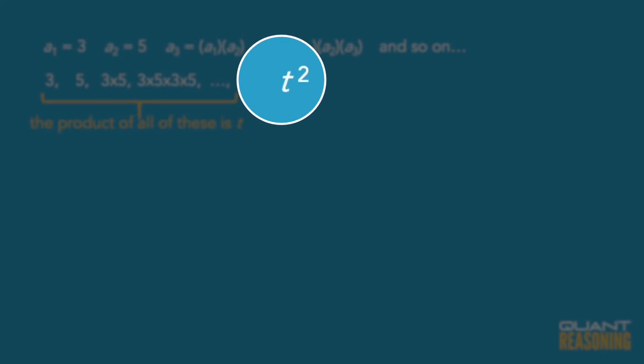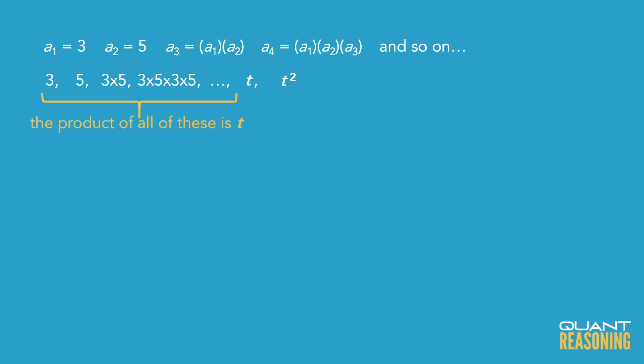And the next number after that will be the product of all the numbers before it. So t times t times t squared, or t to the power of 4.